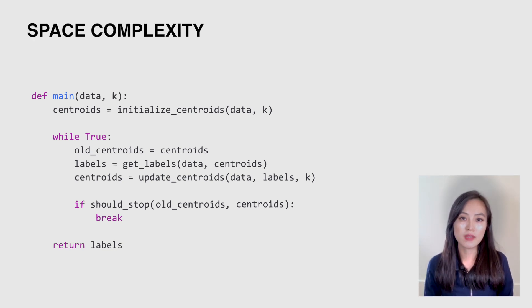Okay, so what is the space complexity of the implementation? Let's look at the intermediate variables we have created. We use a list called labels to store the cluster assignment for each data point. We also use a list called centroid to store updated centroid in each iteration. Therefore, the space complexity is O(k + n). When k is far less than n, we can simply write it as O(n).